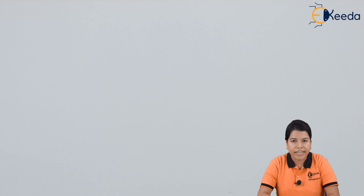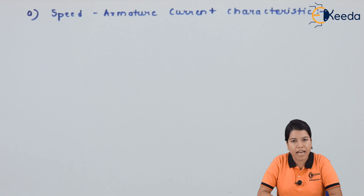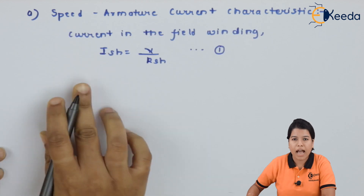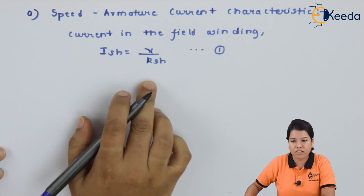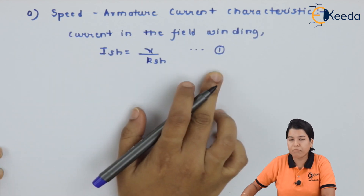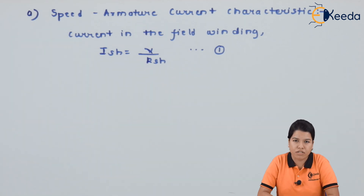First, the speed-armature current characteristic. In case of DC shunt motor, a constant voltage V is supplied to the field winding as well as the armature winding. Hence, the current in the field winding can be written as Ish = V / Rsh (Equation 1). Now, if the supply voltage is constant, then the current is also constant.